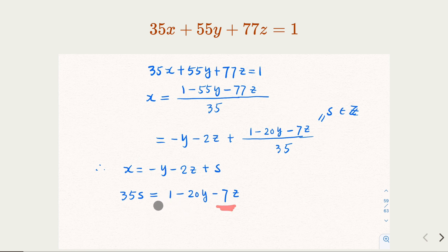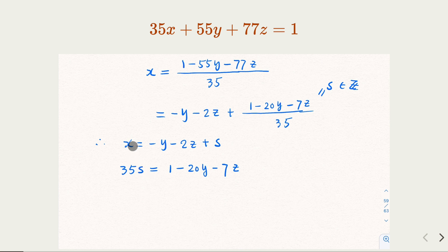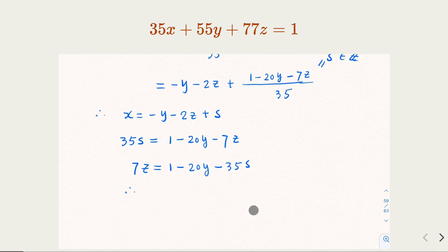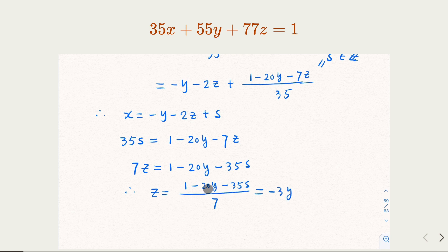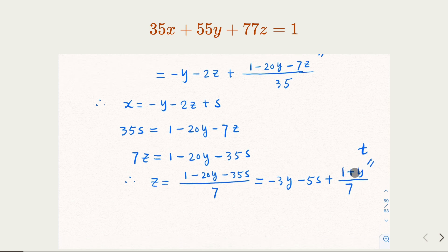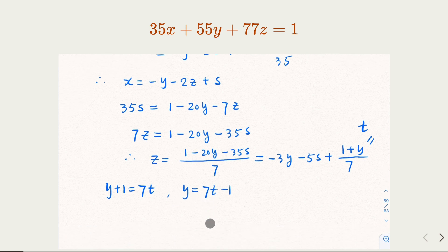Now we work with the new equation 35s = 1 − 20y − 7z, choosing smallest absolute value 7. So 7z = 1 − 20y − 35s, giving z = −3y − 5s + (1 + y)/7. This fraction must be an integer — call it t. So (y + 1)/7 = t, meaning y + 1 = 7t, thus y = 7t − 1.